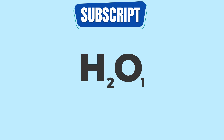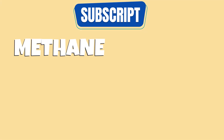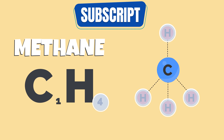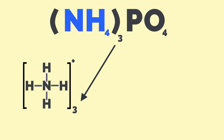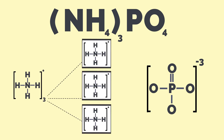Looking at H2O, we can see there are two hydrogen atoms and one oxygen atom. In methane, there is one carbon atom and four hydrogen atoms. A subscript can also tell us the number of molecules in a compound. In ammonium phosphate, we can see that it is made up of two molecules: ammonium NH4 and phosphate PO4. Ammonium is enclosed in brackets with a subscript 3, telling us there are three molecules of ammonium in the compound. Phosphate is not enclosed in parentheses, so the compound has only one molecule of phosphate.